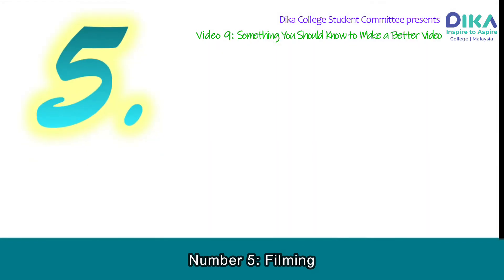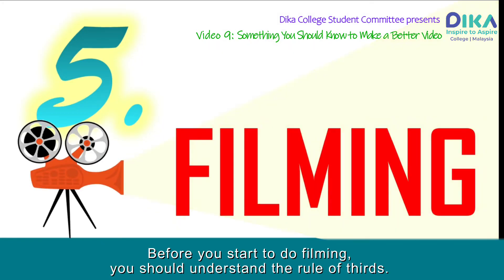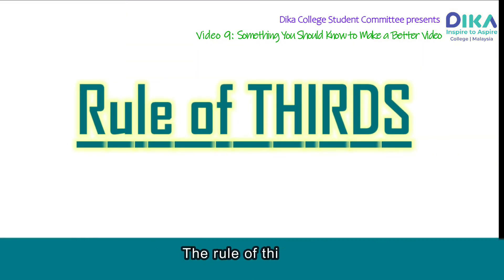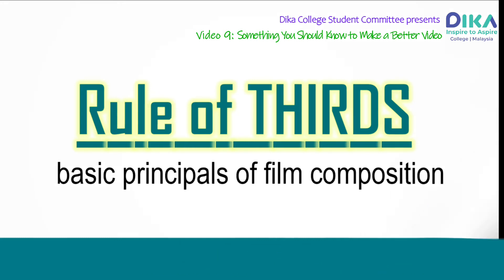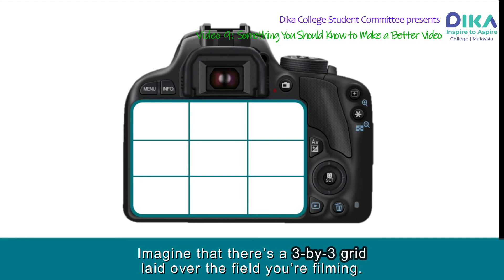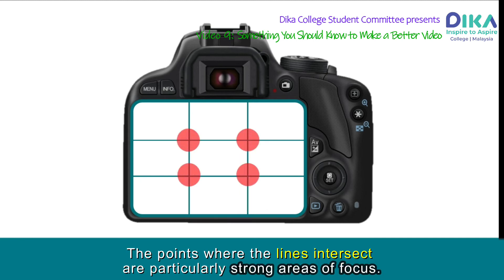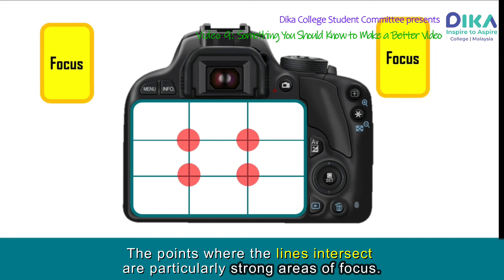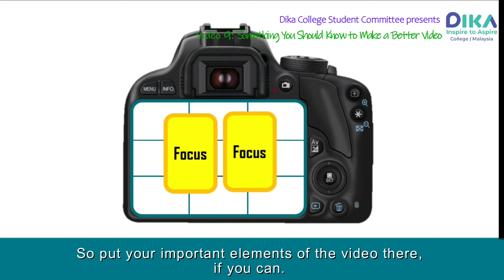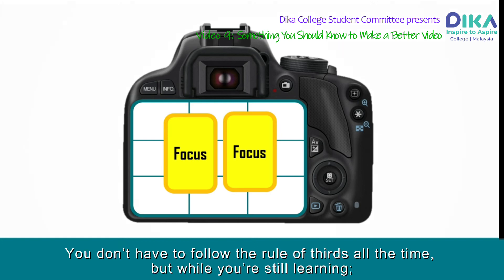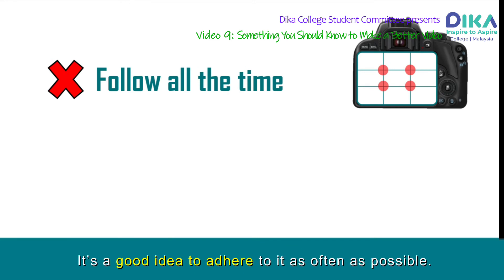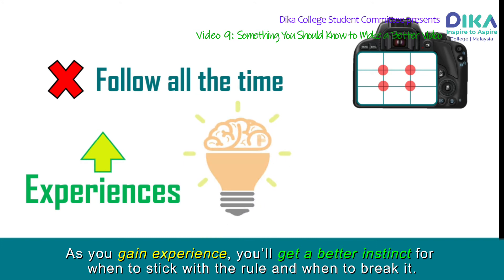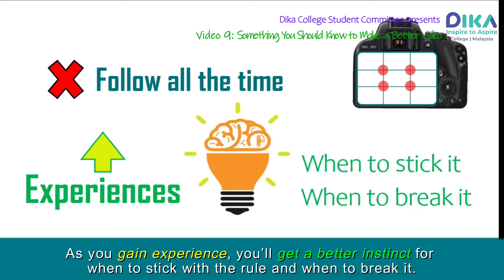Number 5: Filming. Before you start filming, you should understand the rule of thirds. The rule of thirds is one of the most basic principles of film composition. Imagine that there's a 3x3 grid laid over what you're filming. The points where the lines intersect are particularly strong areas of focus, so put your important elements of the video there if you can. You don't have to follow the rule of thirds all the time, but while you are still learning, it's a good idea to adhere to it as often as possible. As you gain experience, you will get a better instinct for when to stick with the rule and when to break it.